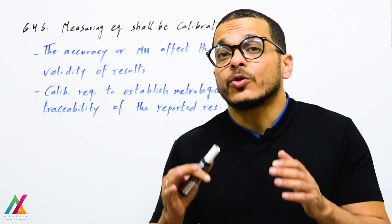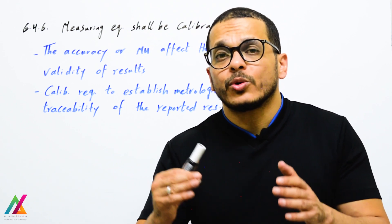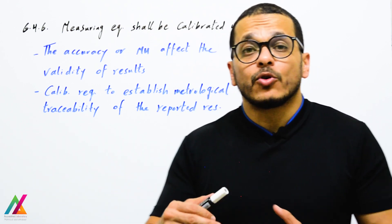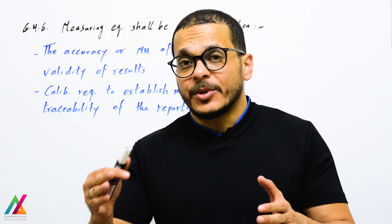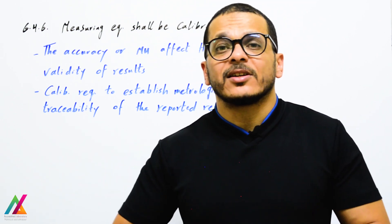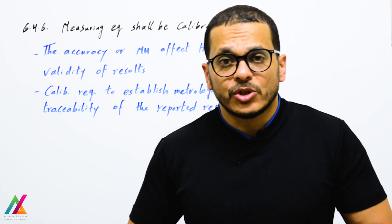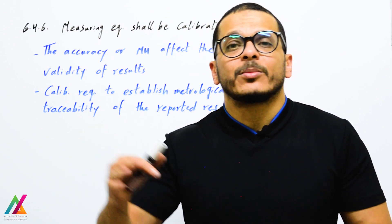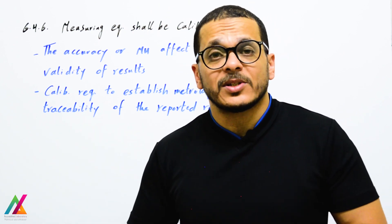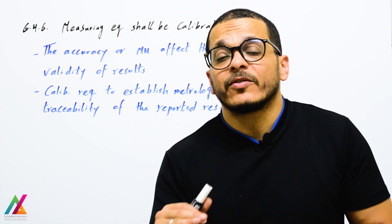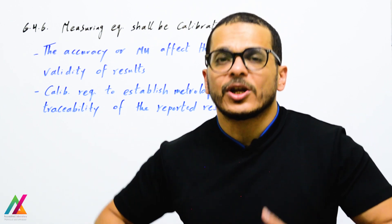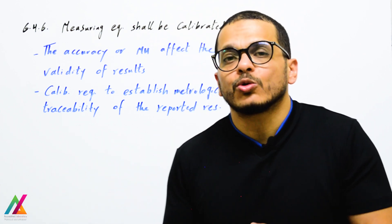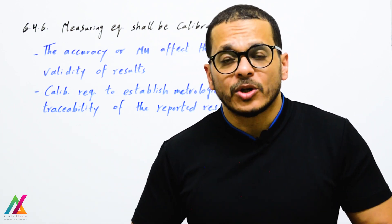Measuring equipment shall be calibrated when accuracy or measurement uncertainty affects the validity of results, and calibration is required to establish metrological traceability of reported results. Any measuring equipment shall be calibrated before use and acceptance criteria must be met — for instruments this includes slope and verification standard checks. If acceptance criteria are not met, recalibrate. For auxiliary apparatus, external calibration by a competent calibration lab is also required to establish metrological traceability.